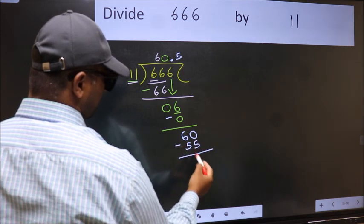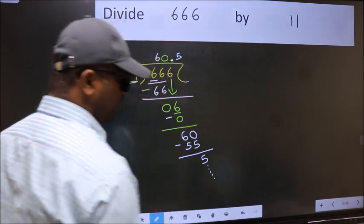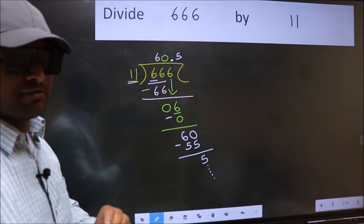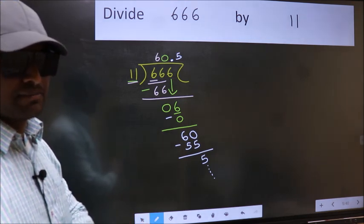Now you should subtract, you get 5, and continue the division. I am not doing that. Did you understand where the mistake happens? You should not do that mistake.